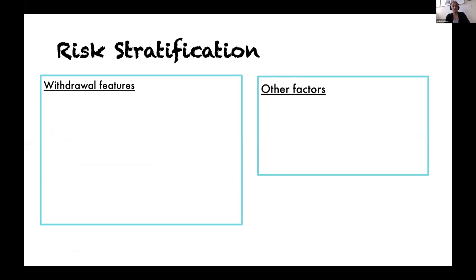How do we risk stratify? There are two categories of features: the actual components of the withdrawal itself, and other patient factors that might shift safety in terms of management. There is very little evidence guiding us here, so this is a compilation of that evidence, my own clinical practice, and what I've seen with my addiction colleagues. With withdrawal features, consider the pattern of consumption. Not only how long they've been consuming alcohol, but how they consume throughout the day. For example, someone who drinks eight beers throughout the day but needs one beer in the middle of the night to stave off withdrawal has a much higher risk of complicated withdrawal than someone who clusters those eight beers in the evening but can go throughout the day without any symptoms.